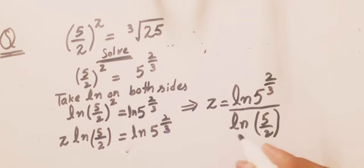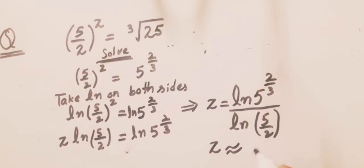With the help of a calculator, we find z, which is approximately equal to 1.17098.